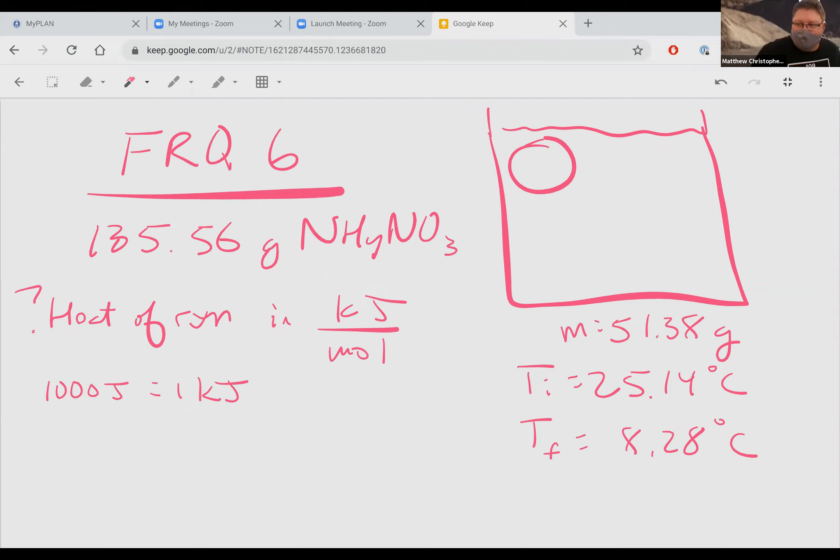Alright, so hopefully we can see this. This is for FRQ number six. I wrote down the information from the problem. Your information might be a little different, so don't assume that any of these numbers match yours.